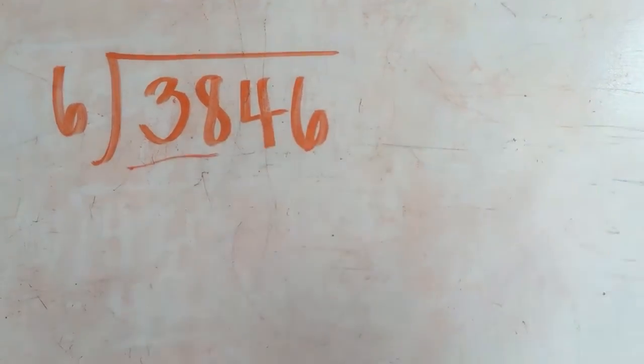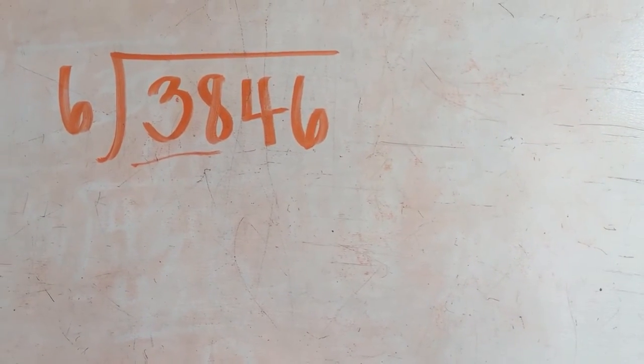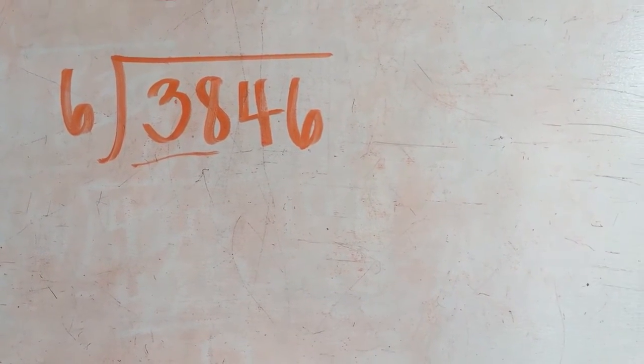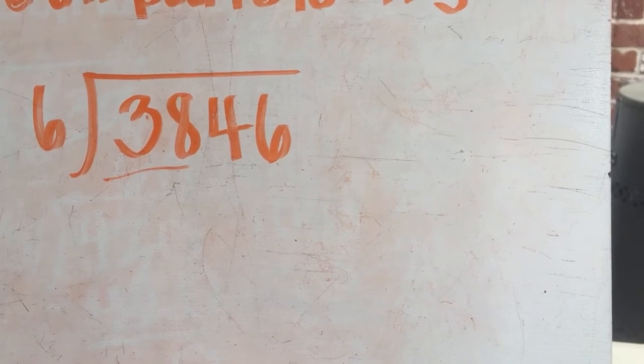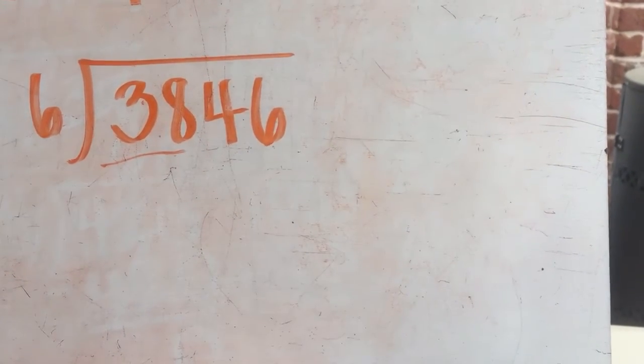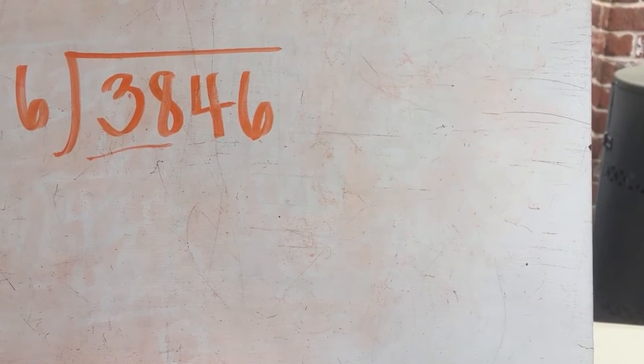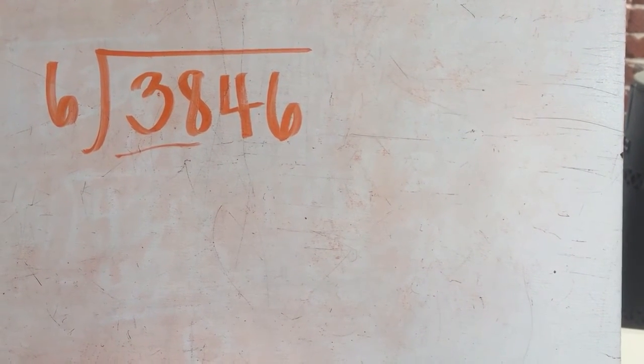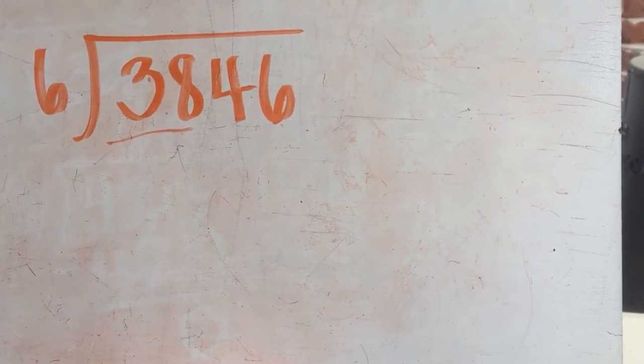I want to skip count by sixes and think about the fastest thing that is close to 38. It can go a little bit over, it can go a little bit under, it's okay as long as it's the closest to it.